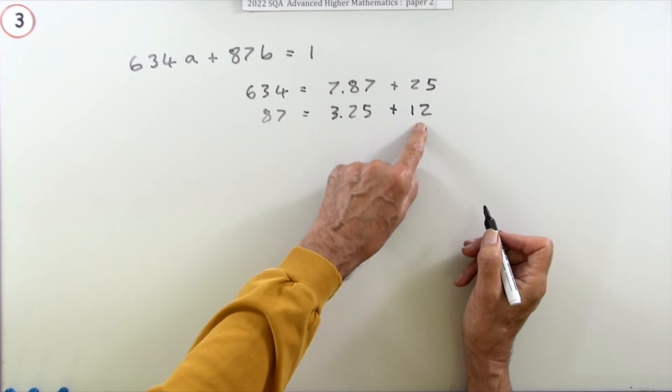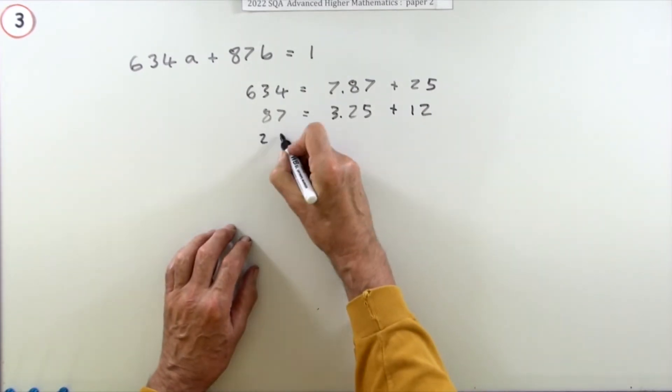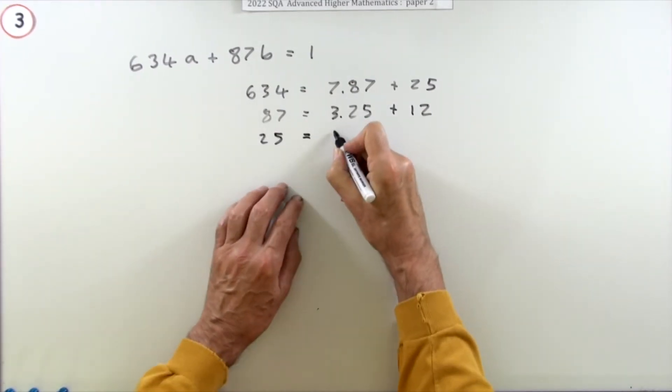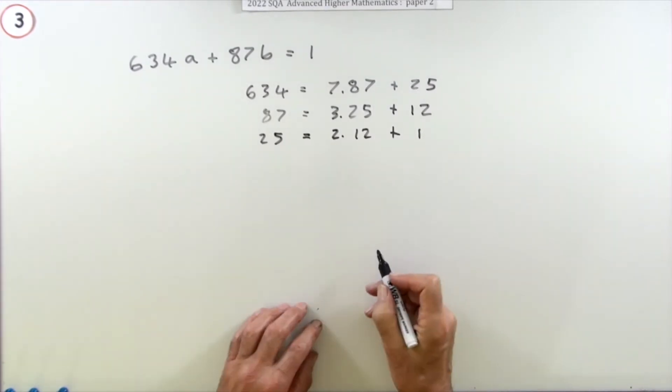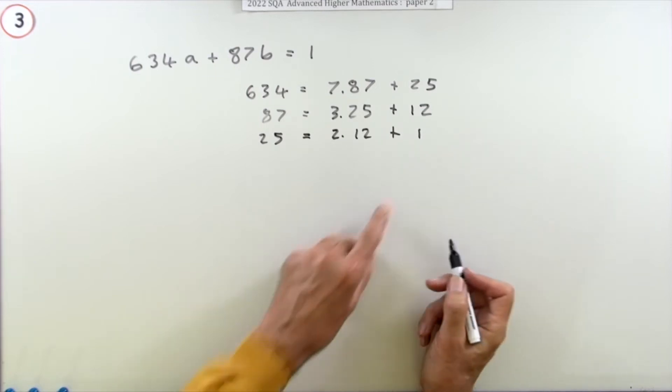Is 12 my biggest number that'll go in? 12 goes into 25. Let's test that. That's two lots of 12, that's 24 and one left over. Well, now you've got it - it can only be one.